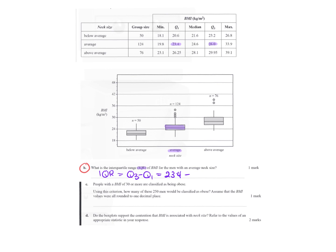So IQR is equal to Q3 minus Q1, which equals 26 minus 23.4 equals 2.6. So that's our IQR. Now, people with a BMI of 30 or more are classified as being obese. So using the criteria, how many of these 250 men are classified as being obese? Assume the BMIs were all rounded to one decimal place.